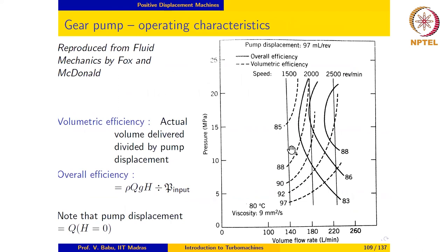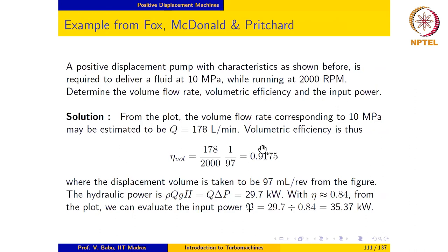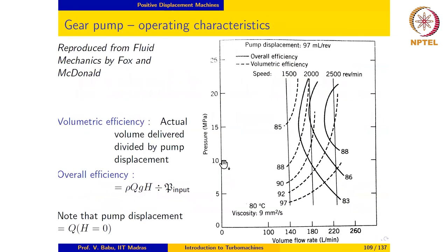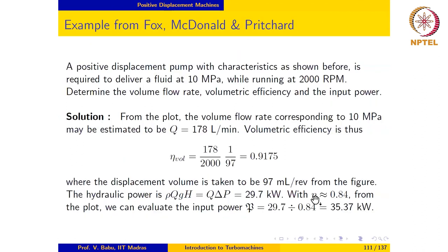To calculate the input power, the hydraulic power is given by rho times Q times g times H. Note that rho times g times H equals delta P, so hydraulic power equals Q times delta P, which works out to 29.7 kilowatts. Going back to the characteristic at delta P of 10 MPa and 2000 RPM, the overall efficiency is roughly 84%. Therefore the input power equals 29.7 divided by 0.84, which gives approximately 35.37 kilowatts.